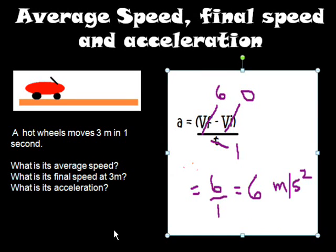So now let's calculate the acceleration of the hot wheels. We know that our initial speed was 0 in this problem, which we assumed it was. And our time is 1 second. And the final speed we calculated to be 6 meters per second. So that makes our acceleration 6 minus 0 divided by 1, which is 6 meters per second squared. That means that the hot wheel is moving 6 meters per second each second.